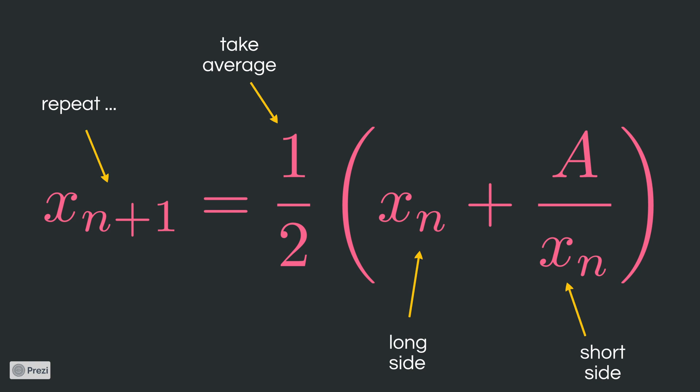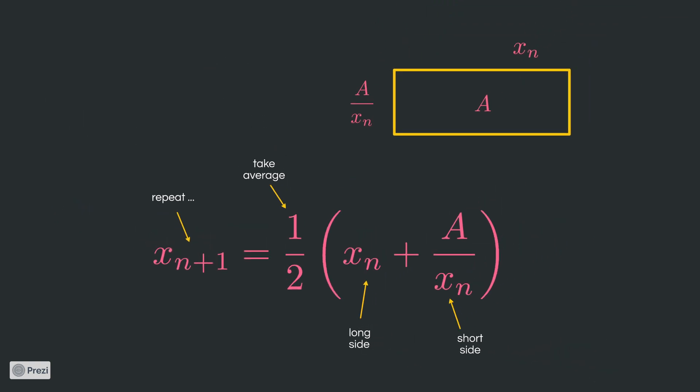Inside of the parenthesis we add up the long and the short side together. The long side is the result from the previous step and the short side is the corresponding ratio. Nothing scary. This only works because the area stayed the same.